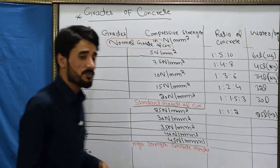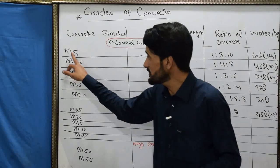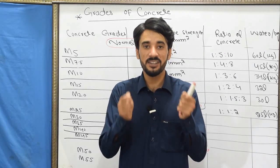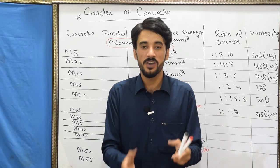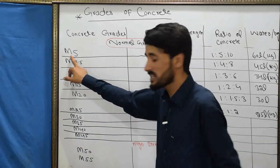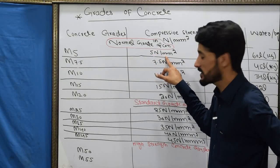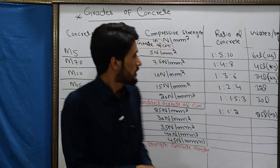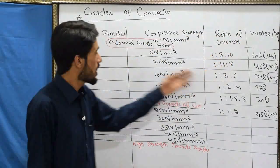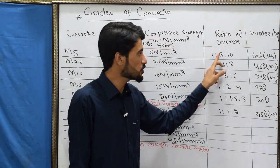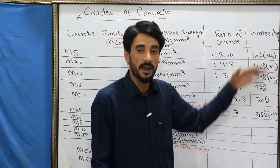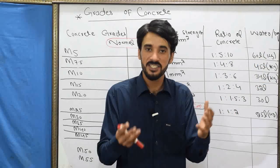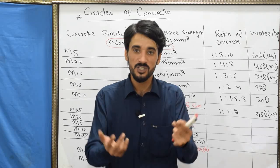For M5: M stands for mix, and 5 indicates the minimum compressive strength of concrete — 5 Newton per millimeter square after 28 days. The ratio between the ingredients of M5 grade concrete is 1:5:10. The water required for M5 grade concrete is 60 liters or 60 kg per bag, since one liter of water equals one kg.